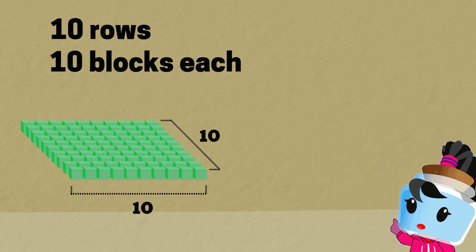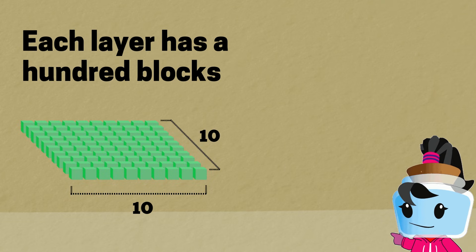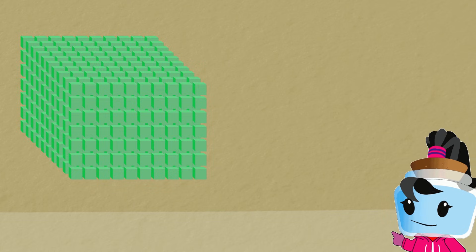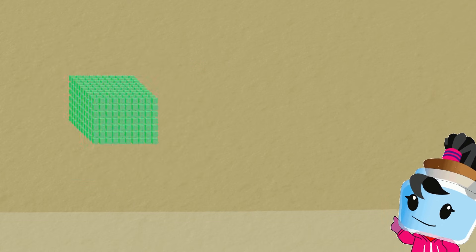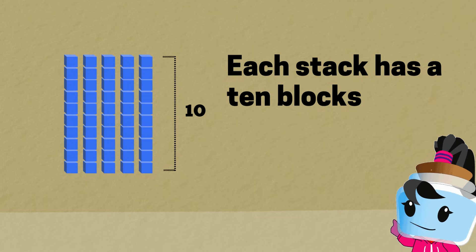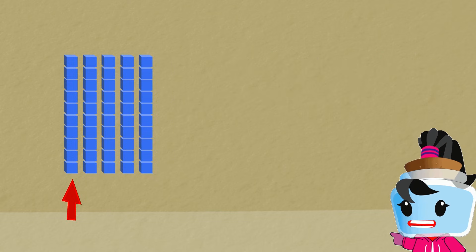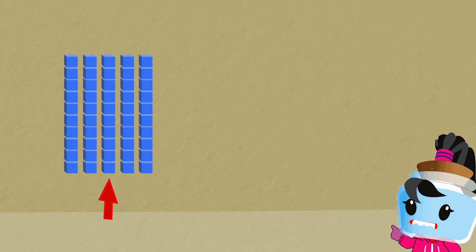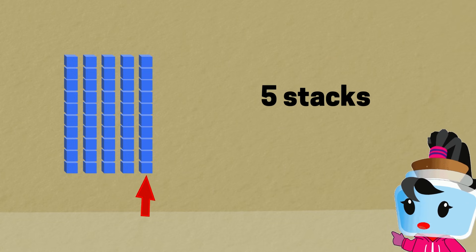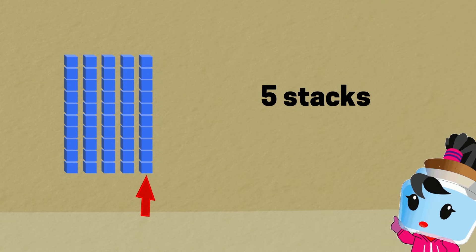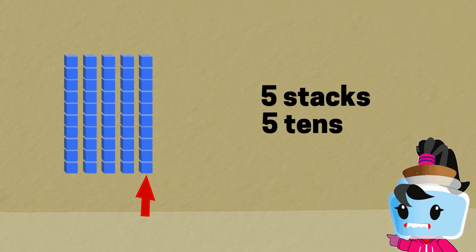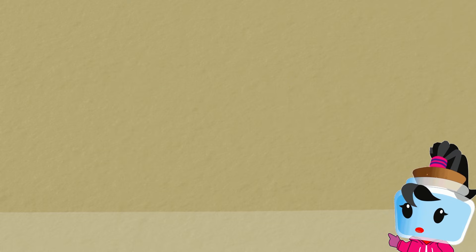we can say that each layer has a hundred blocks. Next, let's look at the stacks of ten blocks. There are one, two, three, four, five stacks — that means we have five tens.